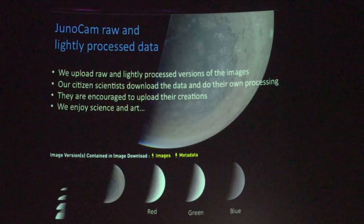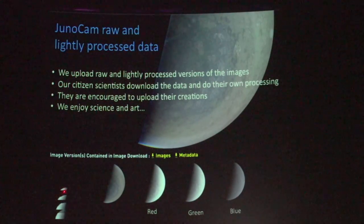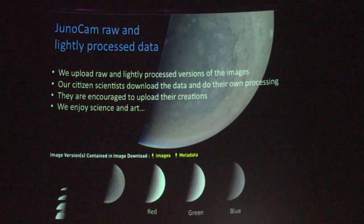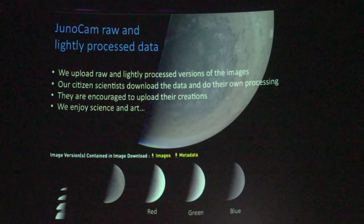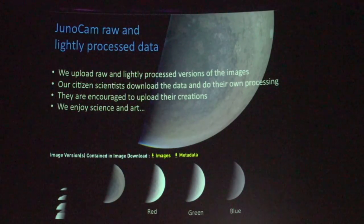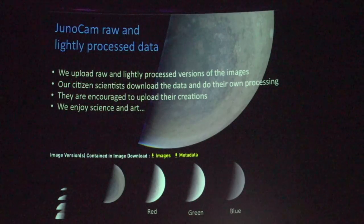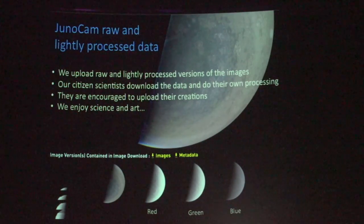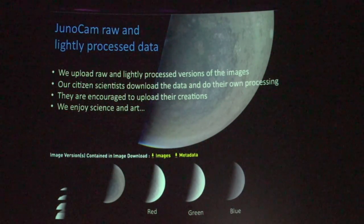Our camera takes the data in little framelets as the spacecraft is spinning — that's what you see over here. Some of our amateurs — I almost hesitate to call them amateurs — like to start with this raw data. We also assemble the strips of the different filters, putting together a blue, a green, and a red image. That's where other people like to start, because they want to work with the black-and-white data and bring out the contrast. Then we create a color version, but it's a so-so pipeline version — though the easiest one to work with, since you can simply run Photoshop.